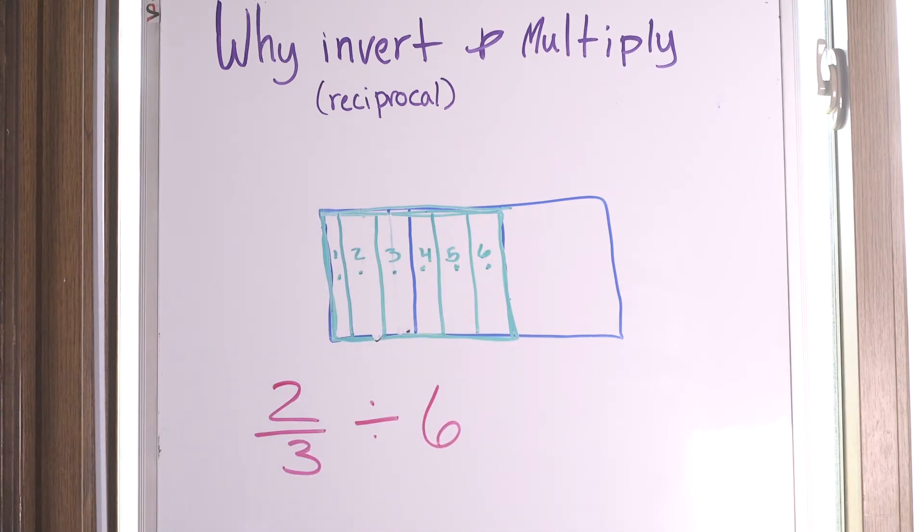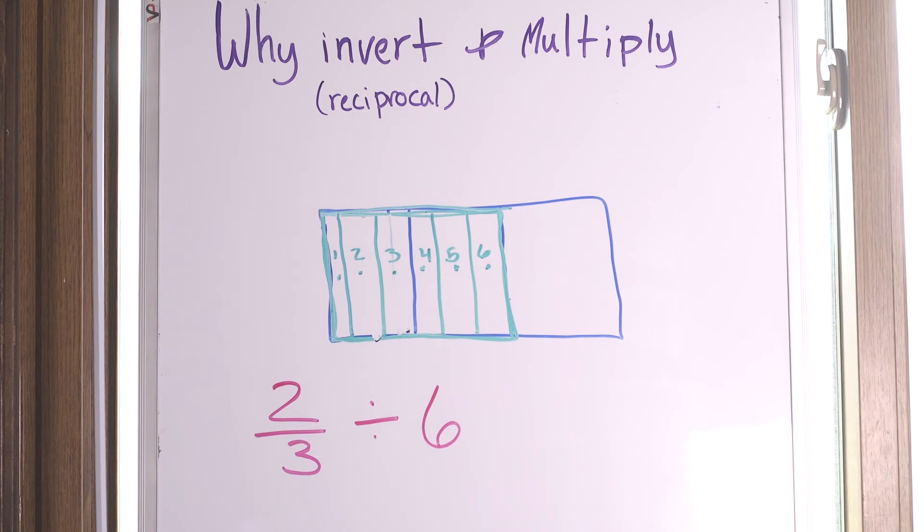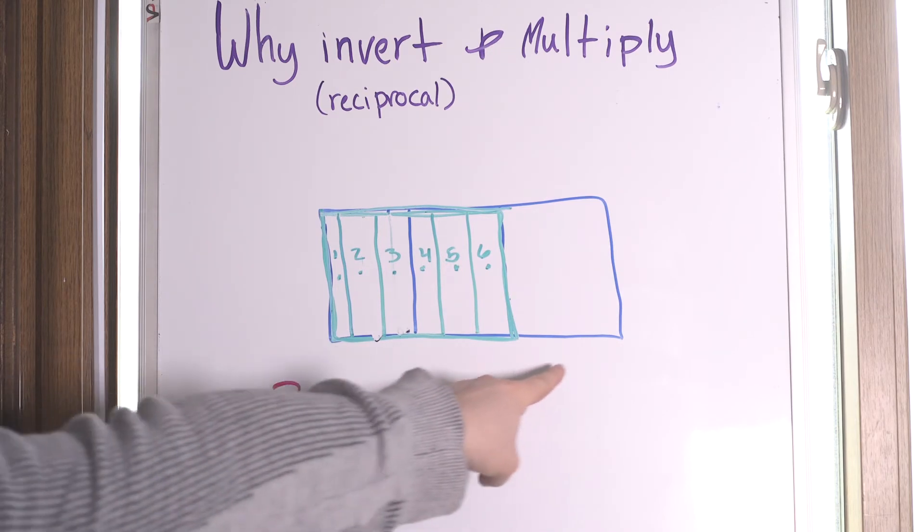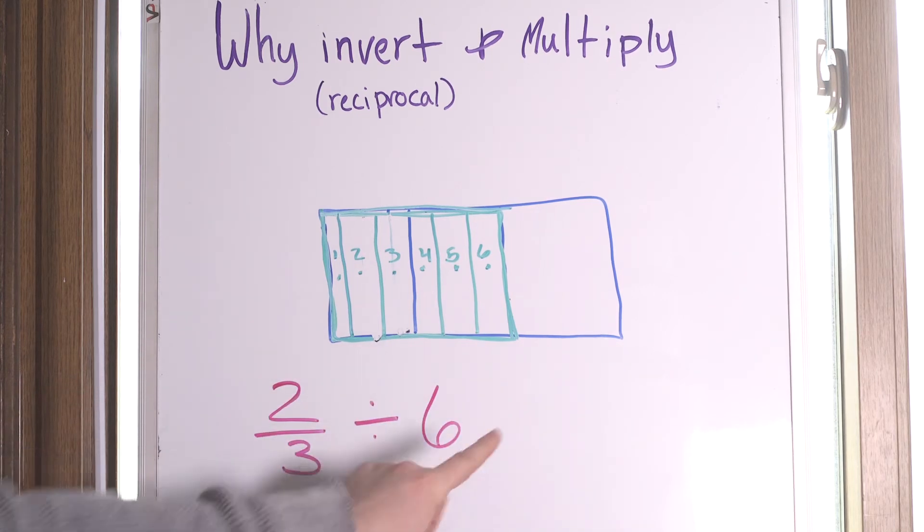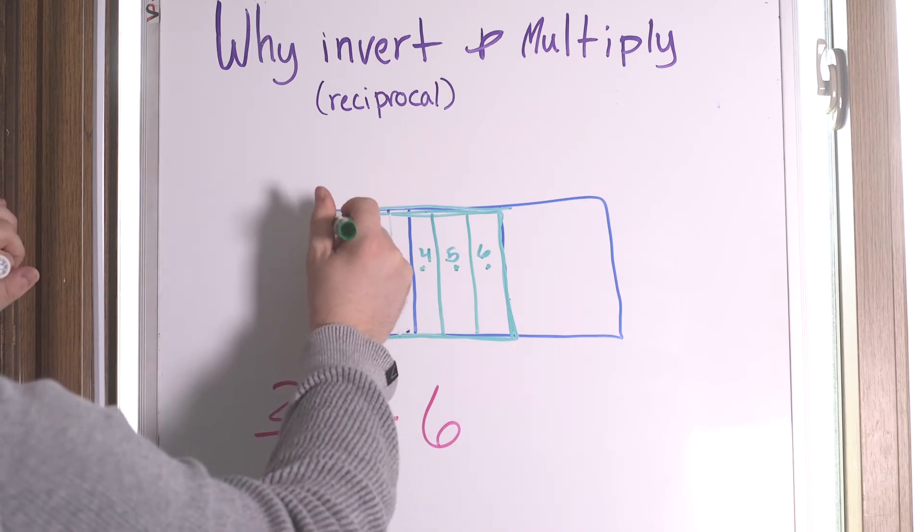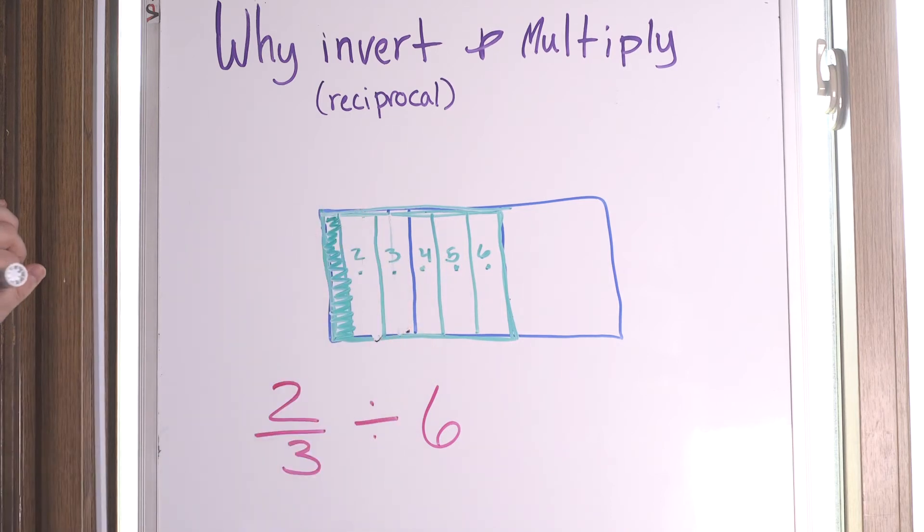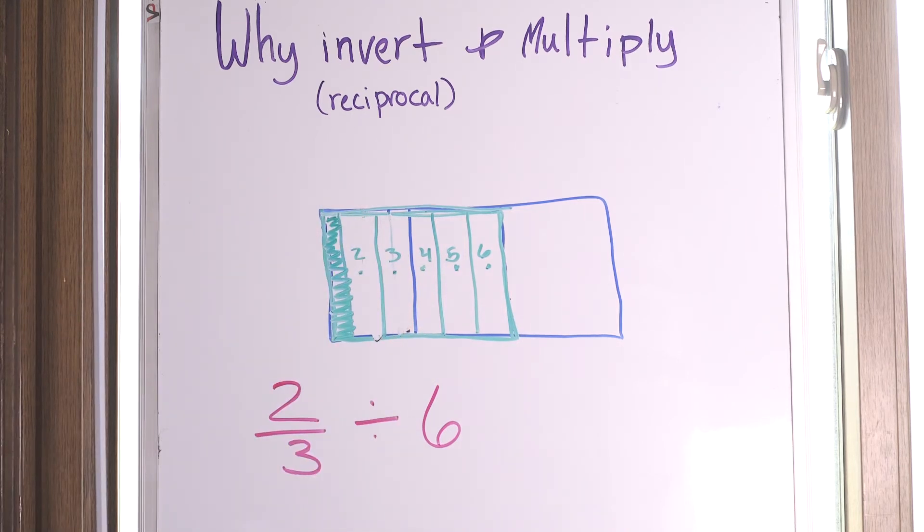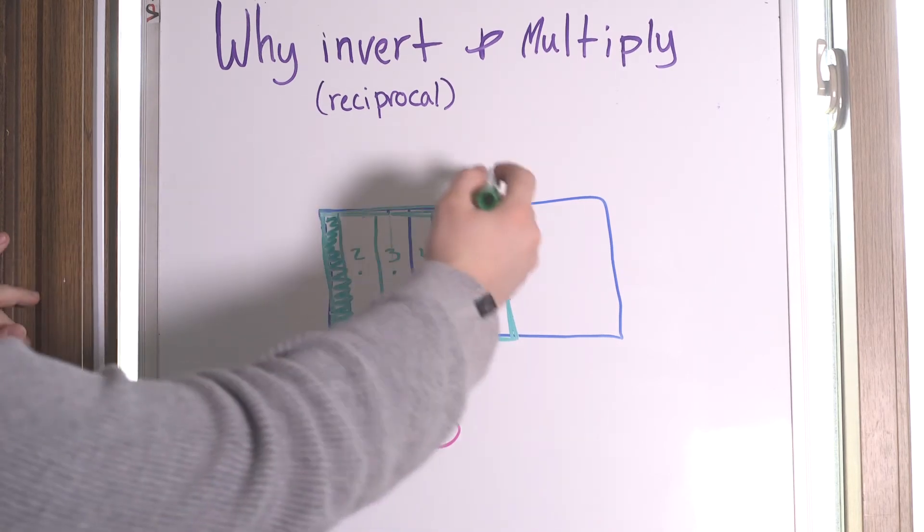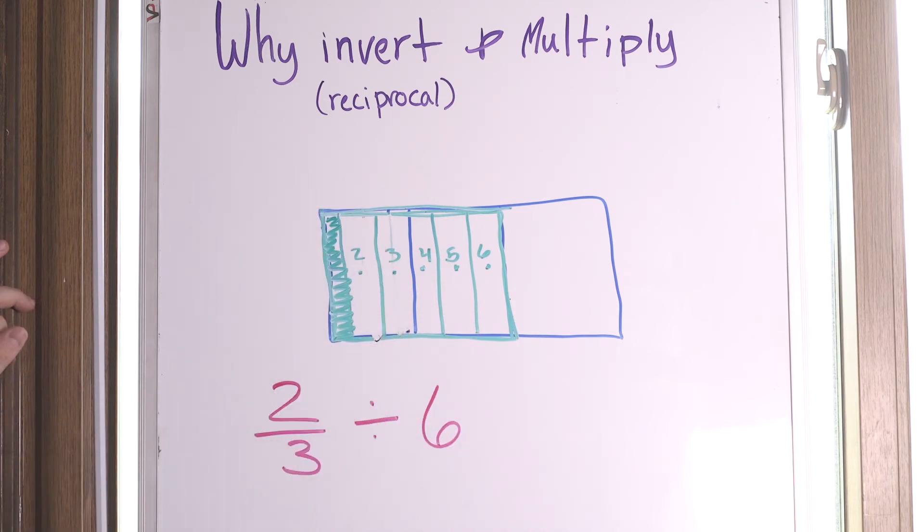All right. So you have just, if you did this, you have just sort of solved this problem with a drawing. You have taken two thirds of the candy bar and you have divided it into six parts. So the question is, how much of the candy bar is one of those six parts? So take two thirds of the candy bar divided into six parts. What is one of these parts?